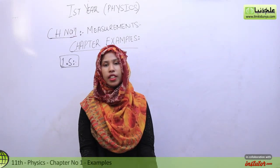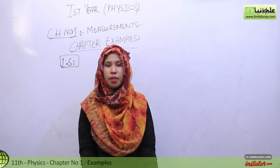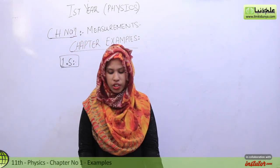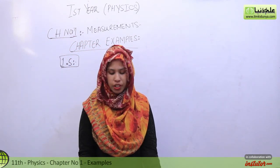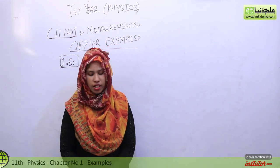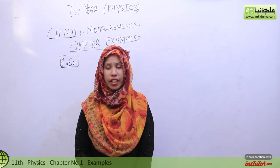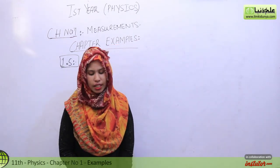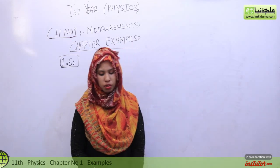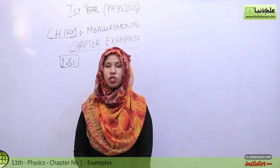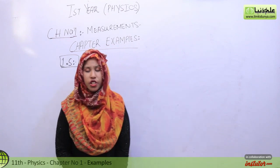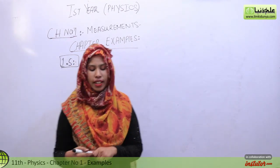Okay students, now let's start with numerical number 1.5. The statement is: we have to derive a relation for the time period of a simple pendulum using dimensional analysis. The various possible factors on which the time period T may depend are the length of the pendulum, the mass of the bob, the angle theta which the thread makes with the vertical, and the acceleration due to gravity g.